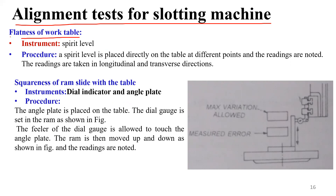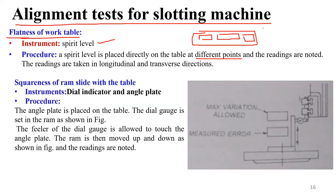Coming to alignment tests for the slotting machine. The first test is flatness of the work table. As with any machine, the instrument required is a spirit level. A spirit level is placed directly on the table at different points and readings are noted. This test is conducted both in the longitudinal direction and the crosswise direction.